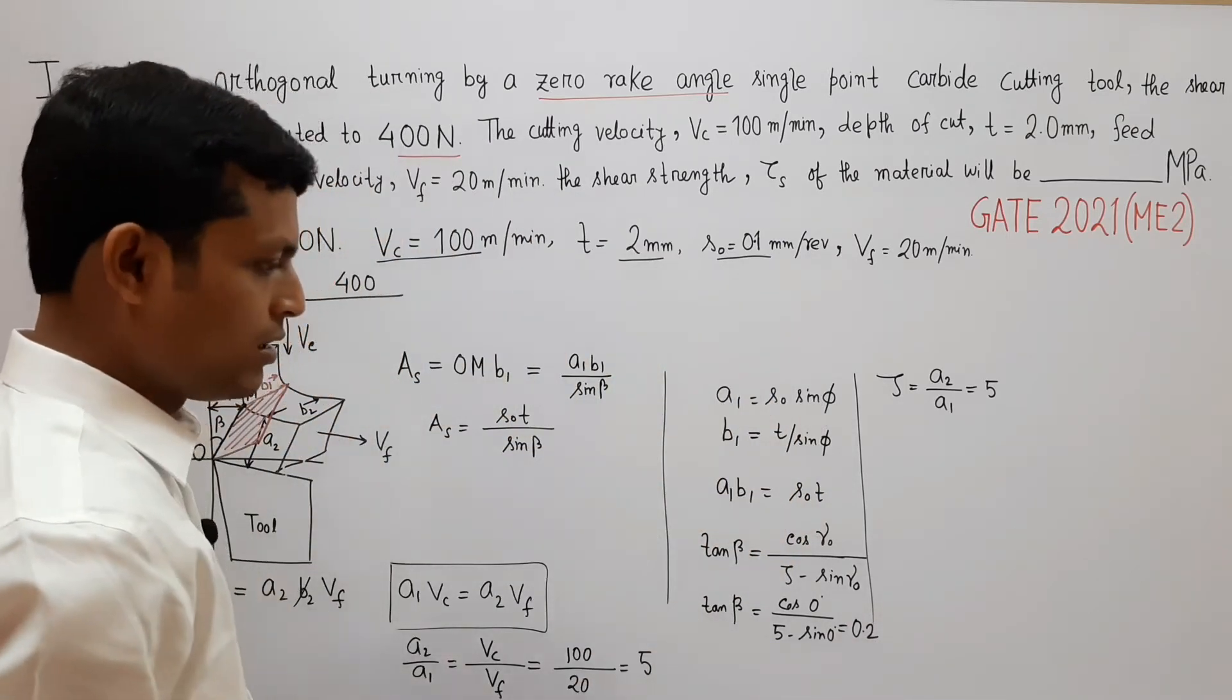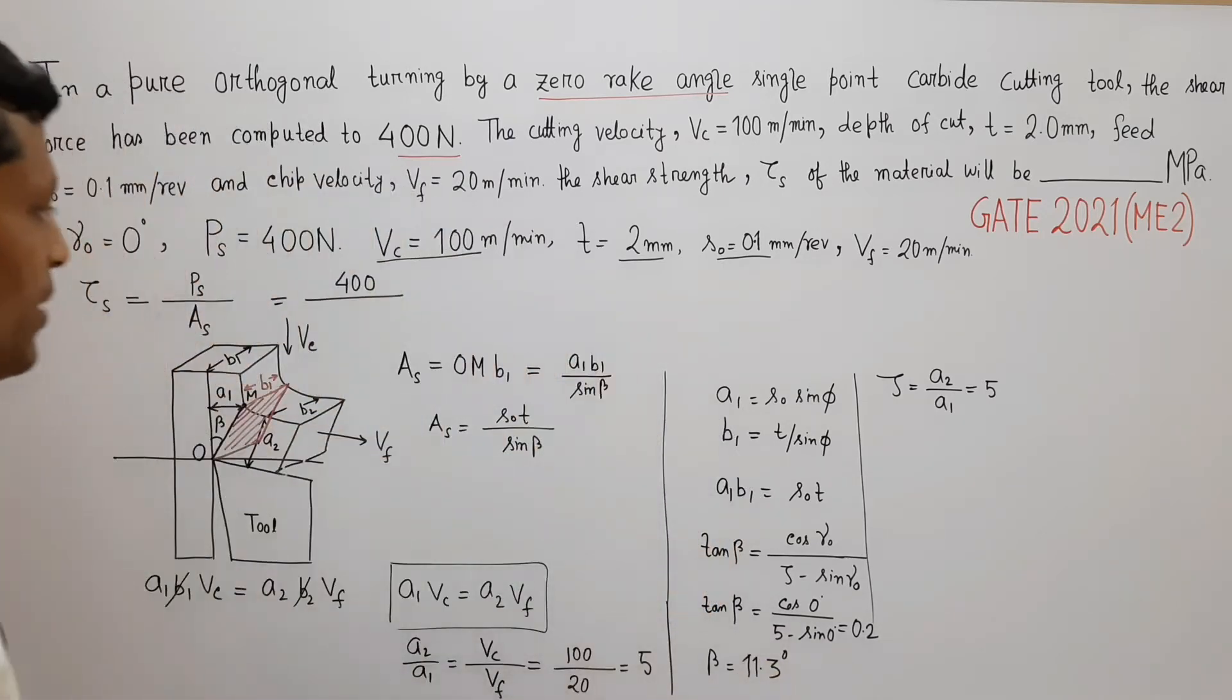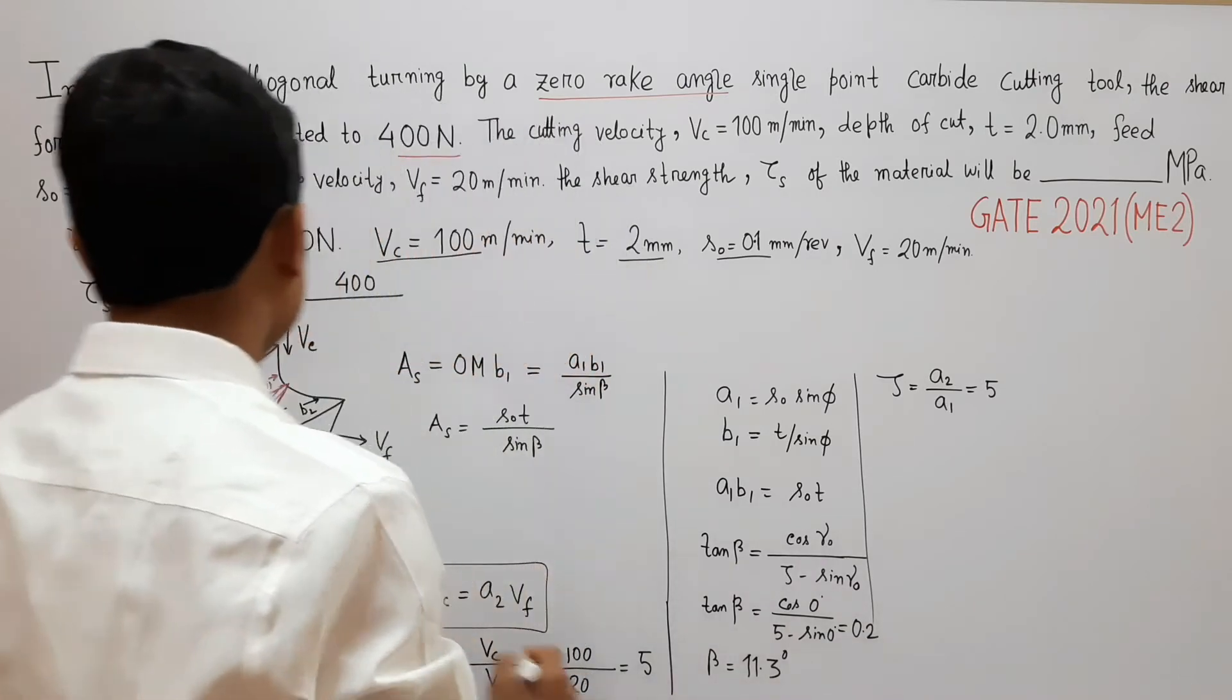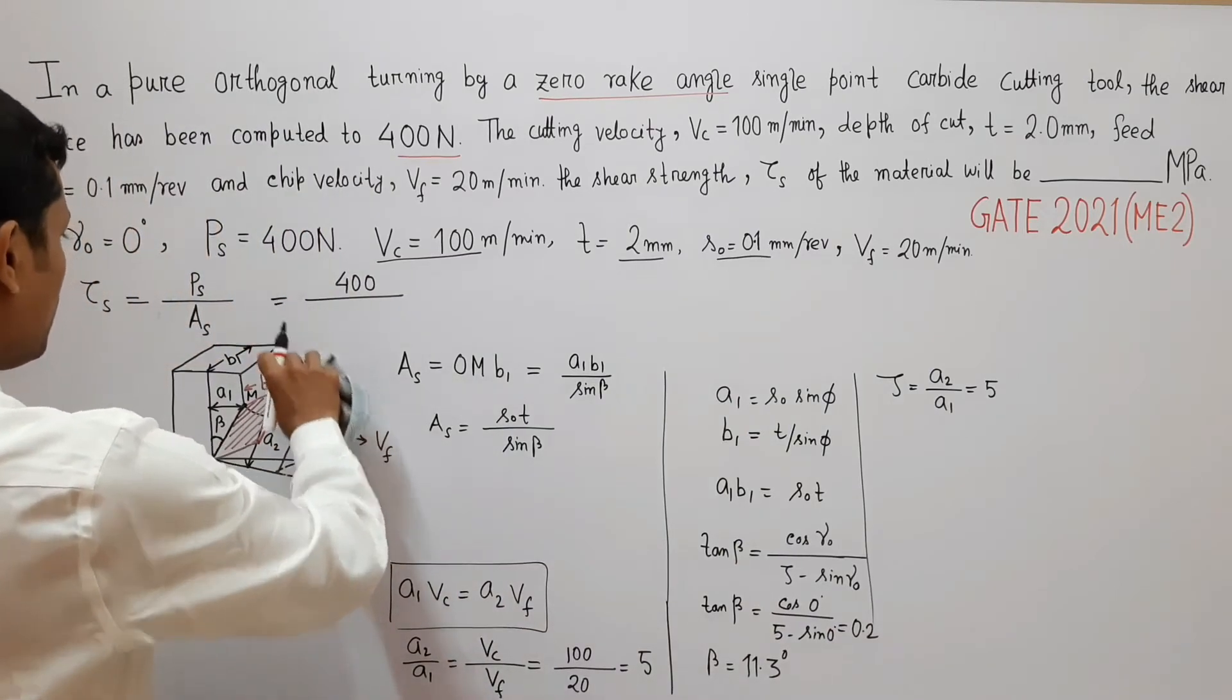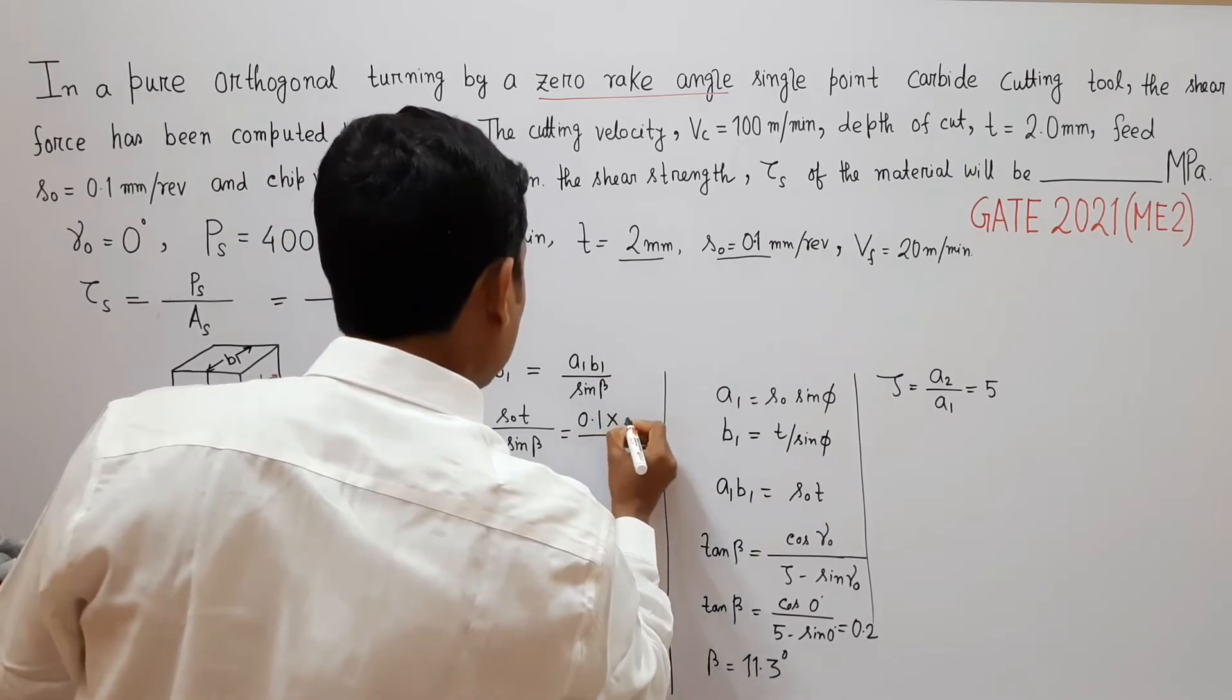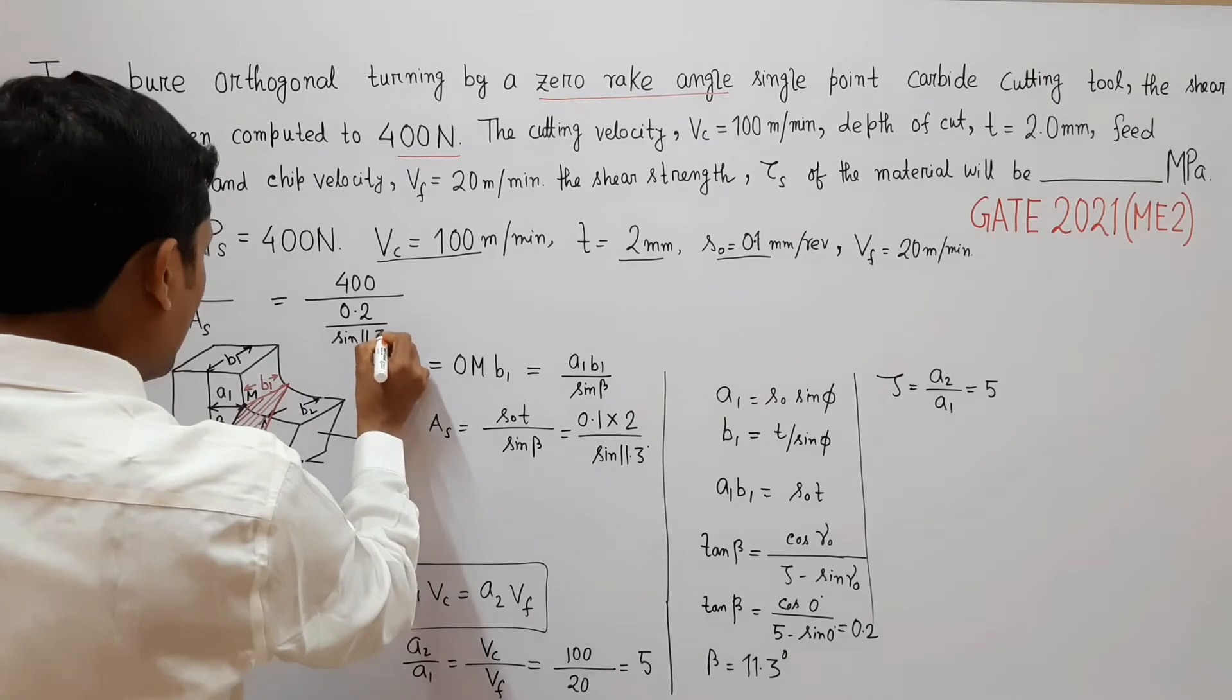So beta is tan inverse 0.2 and from this we can calculate beta as 11.3 degrees. So beta becomes 11.3 degrees, the shear angle. So now this problem becomes very easier. We have to put the values only. So value of A_s is S0, 0.1 into 2 divided by sine 11.3 degrees.